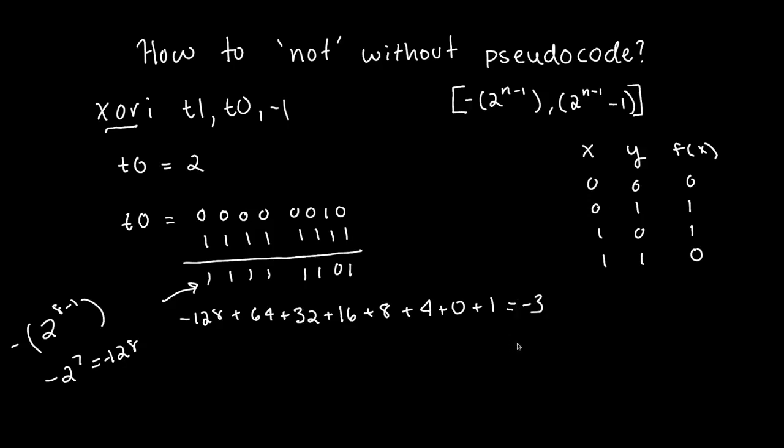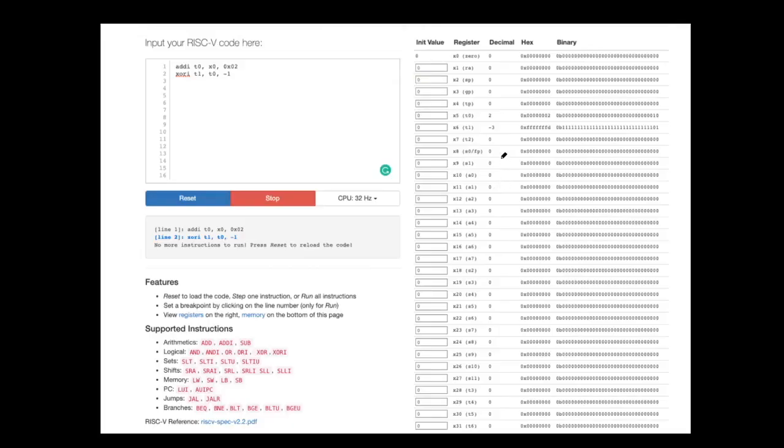And I ran this in an online compiler just to show you what I mean. So this is how you would perform NOT in RISC-V without pseudocode. And here from the online compiler, you can see where I store... Now I'm using hexadecimal, but the concept is the same, and you can see in the decimal that it is still 2.